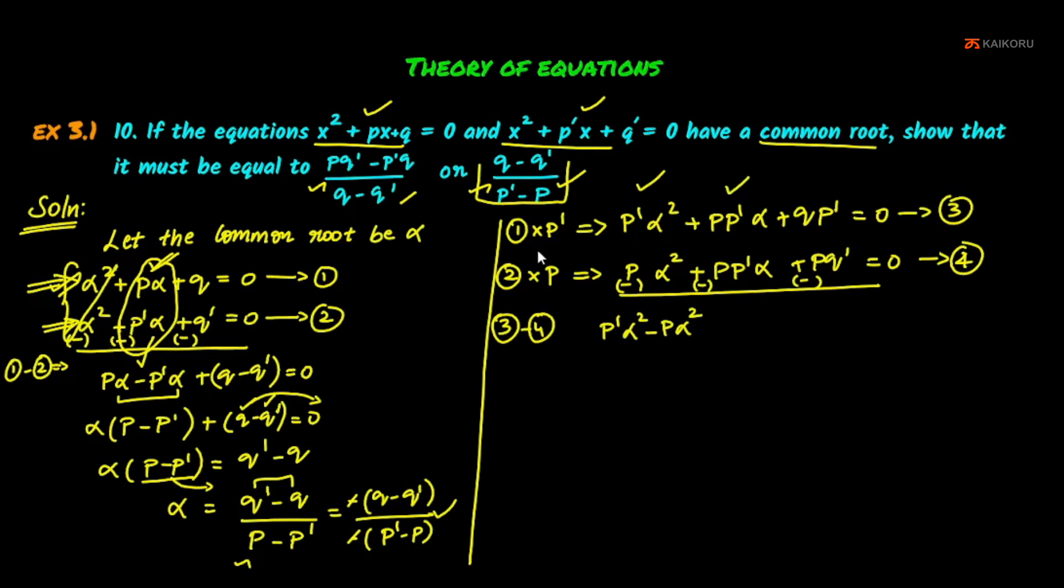The middle terms cancel. Factoring out α² from the first terms, we have α²(p' - p) + pq' - p'q = 0.